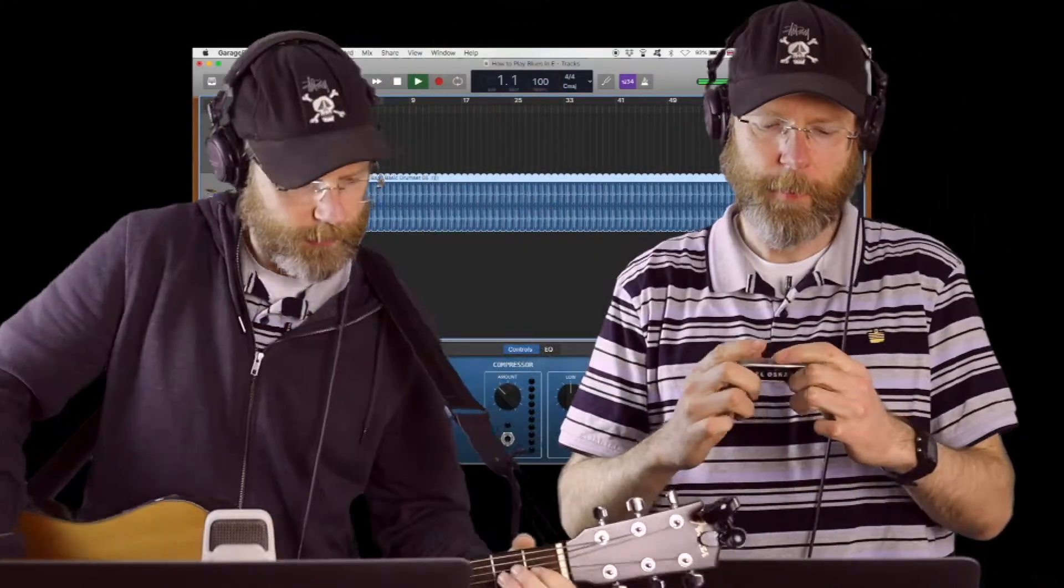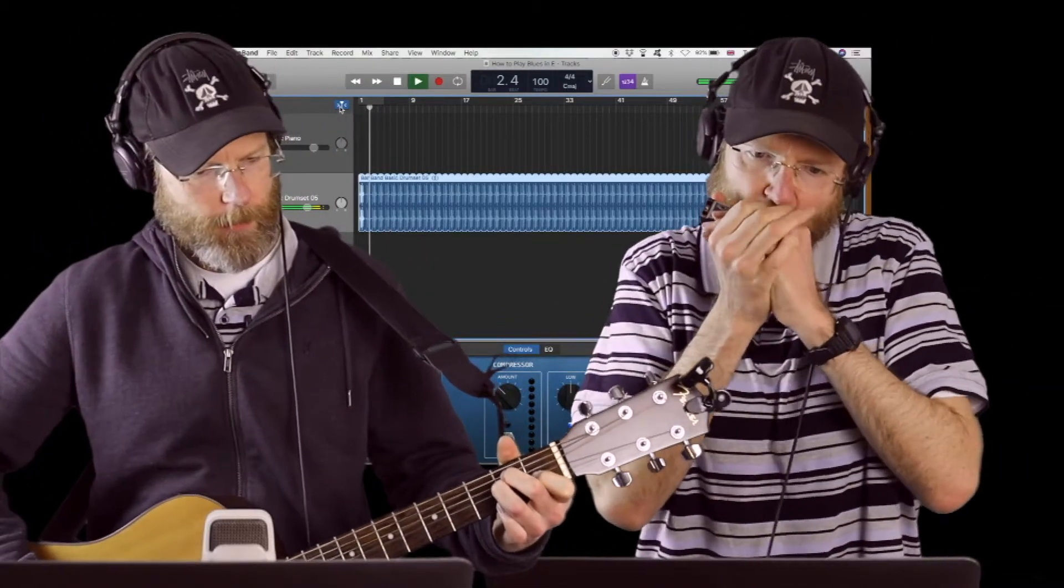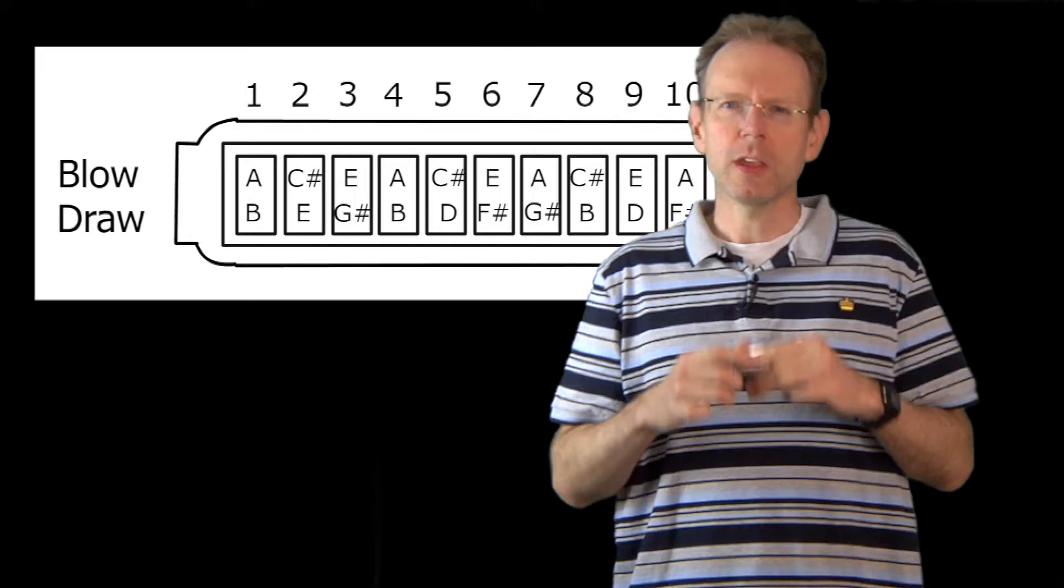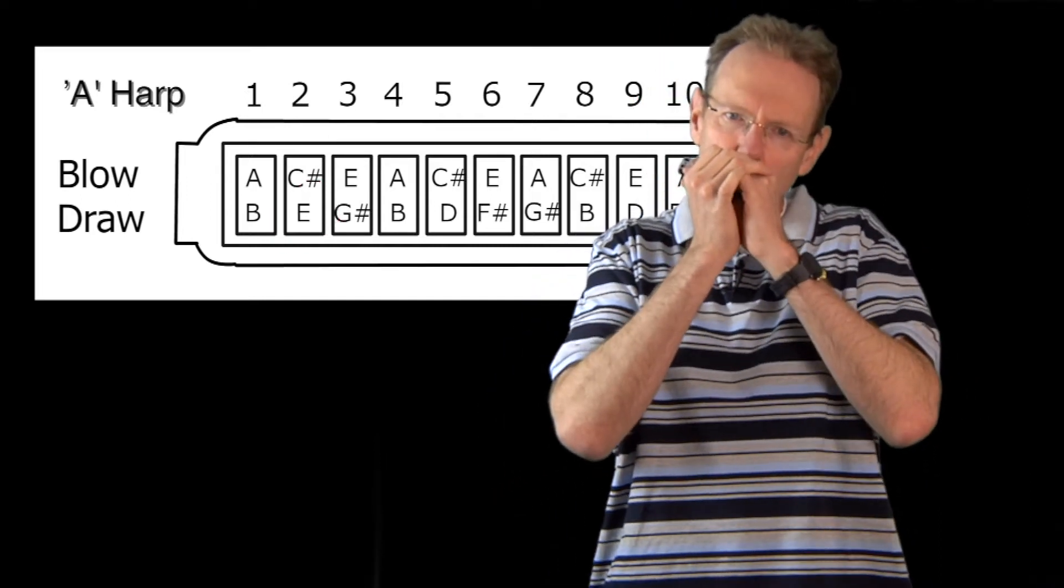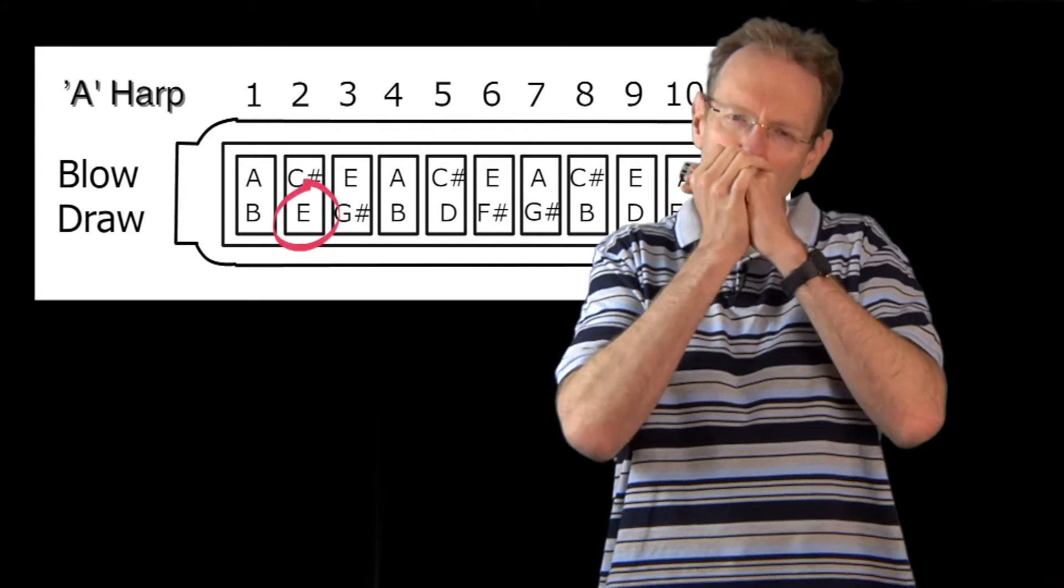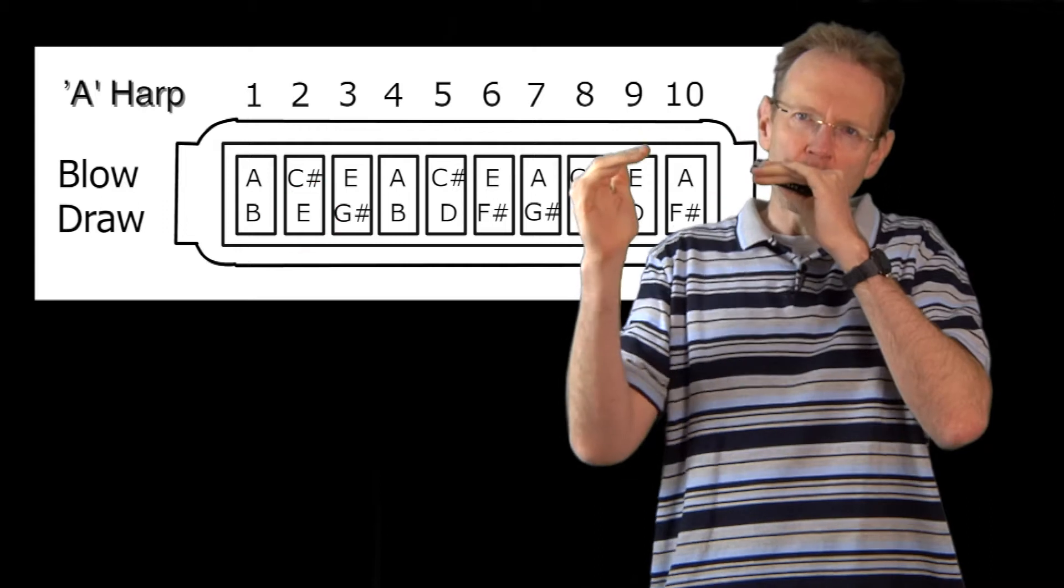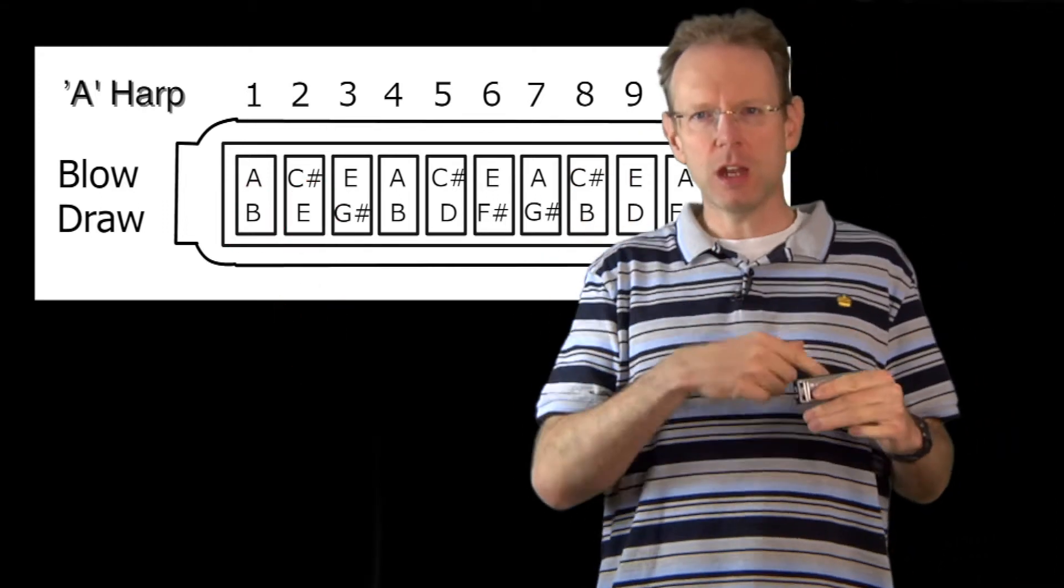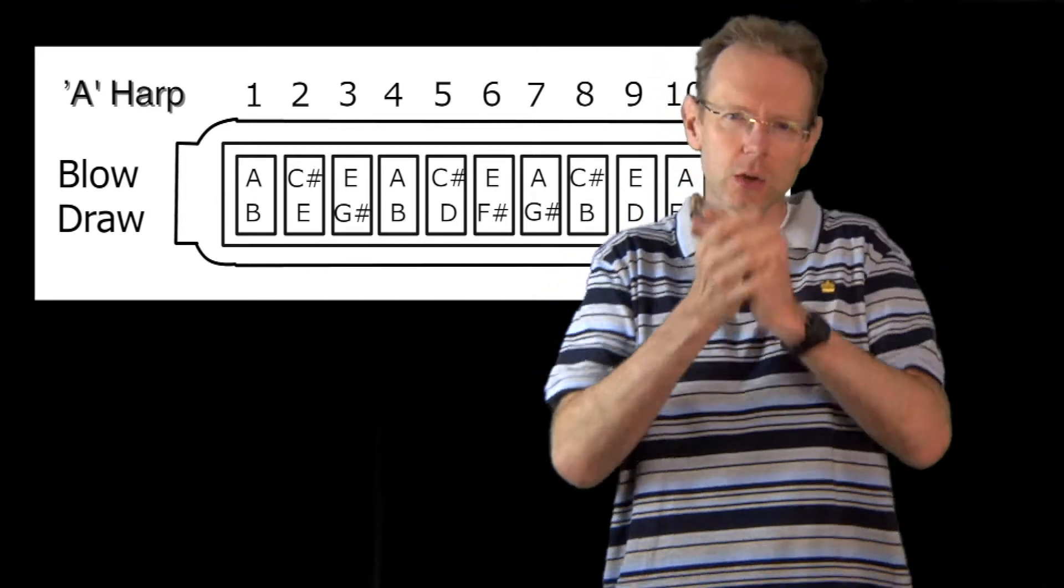Three, two, one, go. So we're starting off on drawing in the second hole. And then it bends down on the second hole. And then you're sliding down to the first hole. And then you're coming back into a bend on the second hole and up to a normal draw note on the second hole.